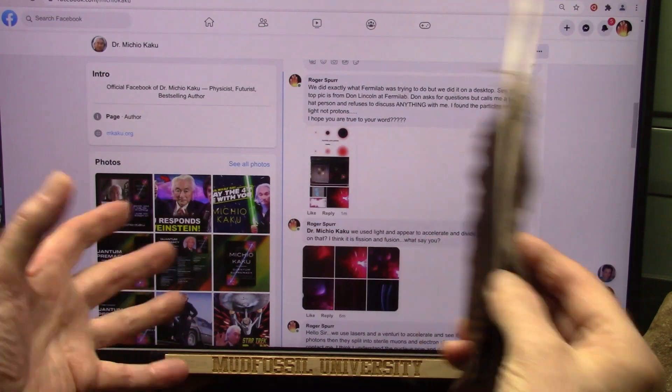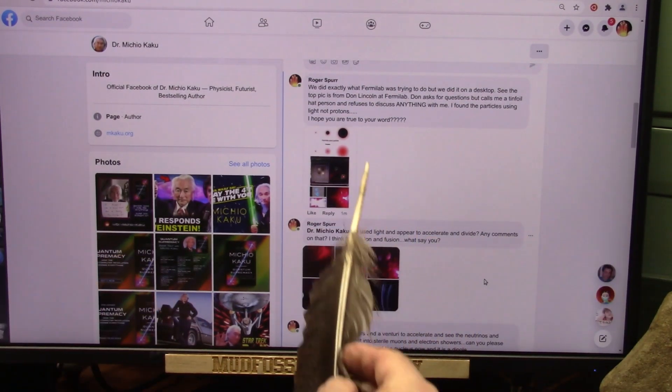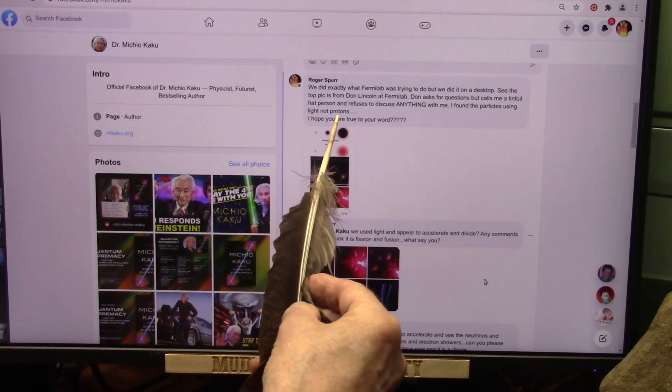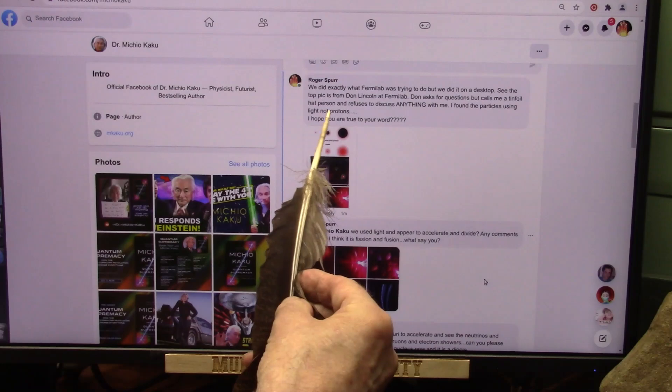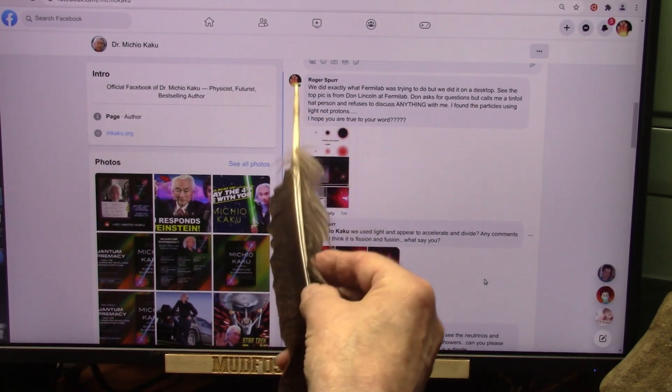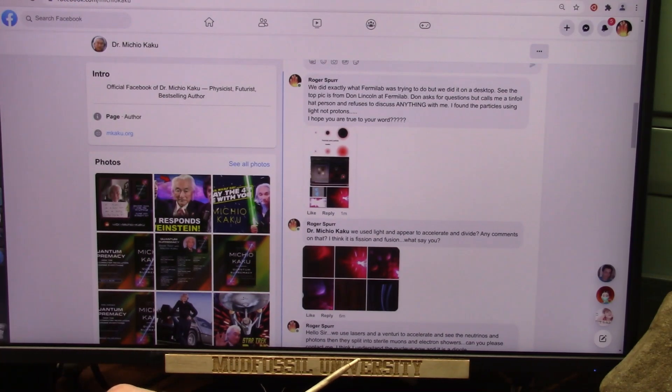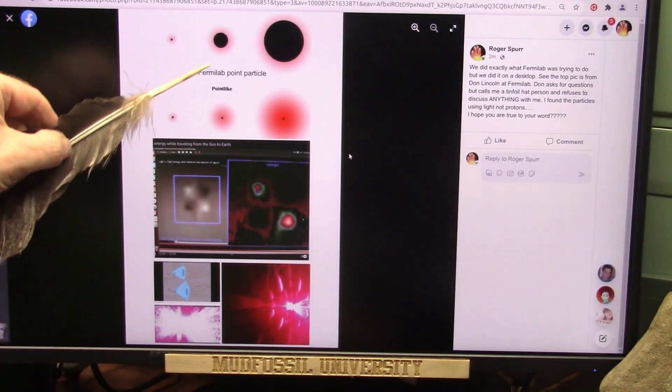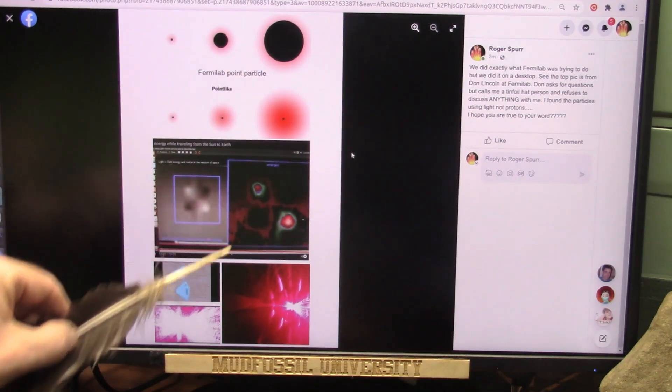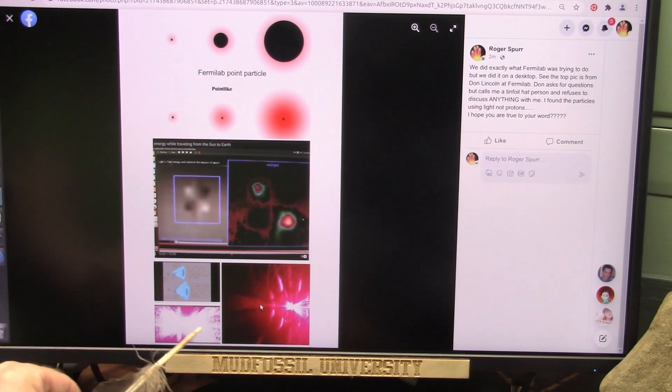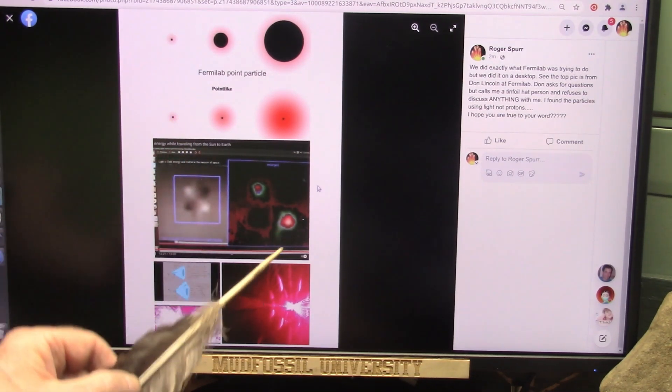This is the pic from Don Lincoln at Fermilab. Don asked for questions, but he calls me a tinfoil hat person and refuses to discuss anything with me. I found the particles using light. I hope you are true to your words because Don Lincoln is not. He will not respond whatsoever. This is what I am showing, Don Lincoln's particles here. The Fermilab was from his article about it. We accelerated the light here and it split here. So I say that's fission and fusion.